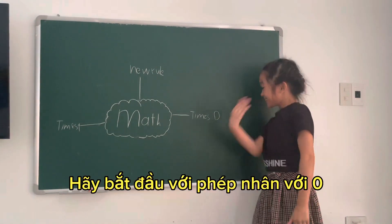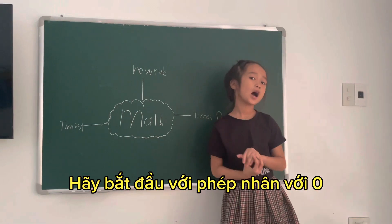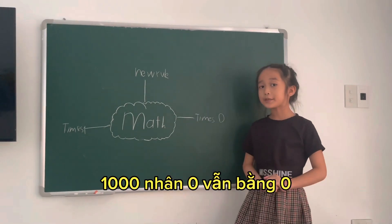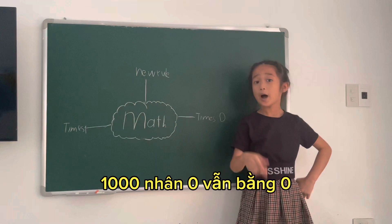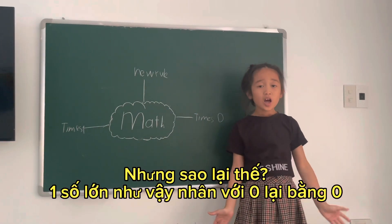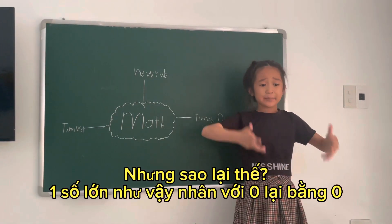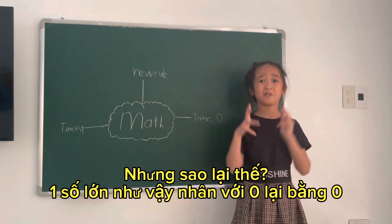Let's start with time zero. One thousand times zero equals zero. But why is that? Such a big number times a small number equals a small number?